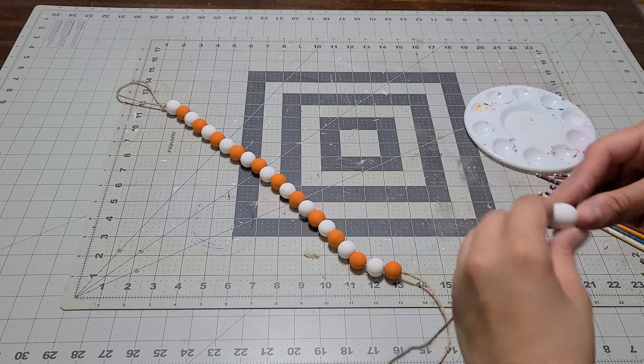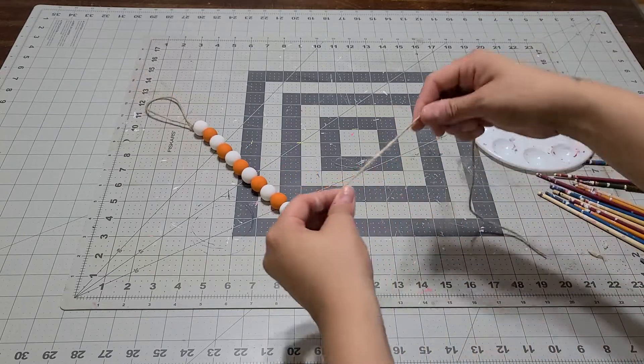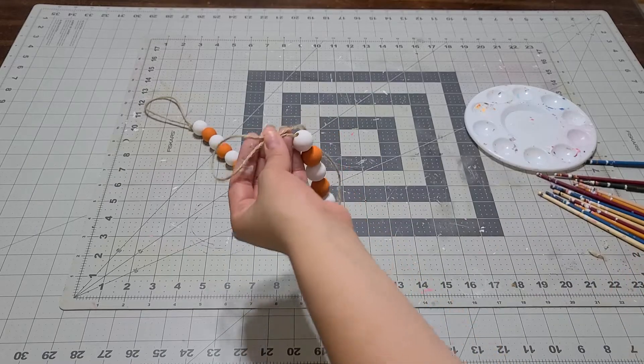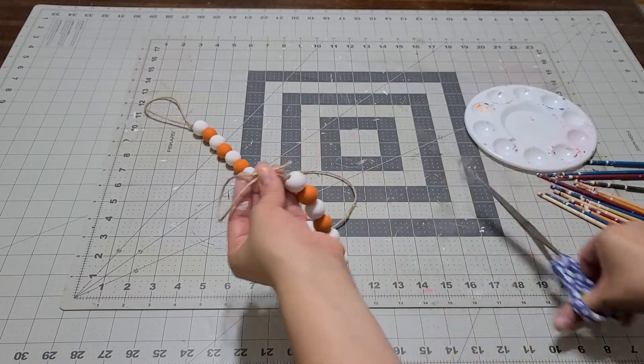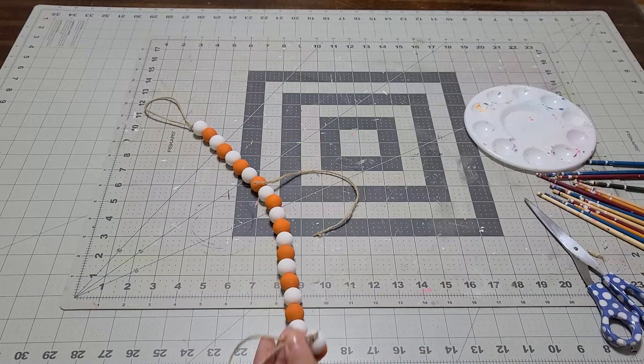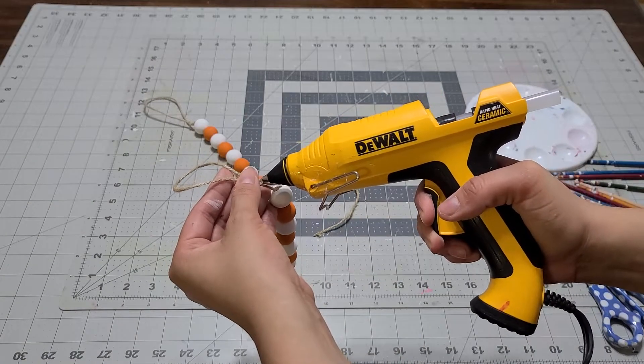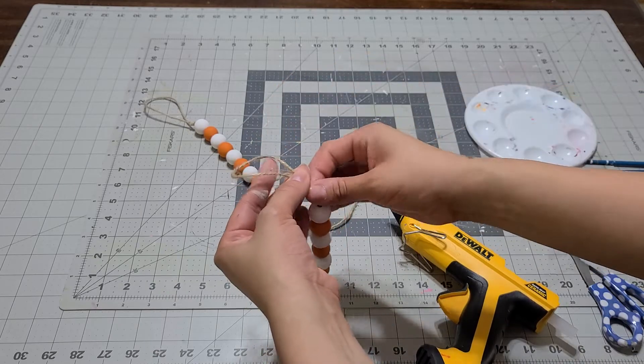Now I'm going to make the hook. I'm going to cut it right there, grab my hot glue gun, and add a little glue right here and close it down. Just melt everything together with your fingers.